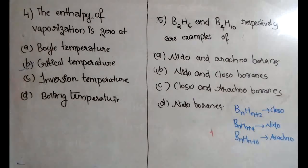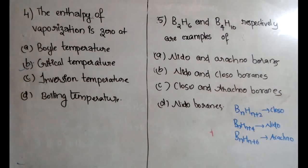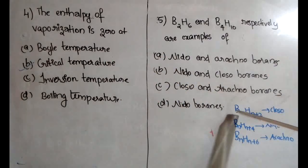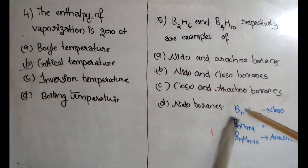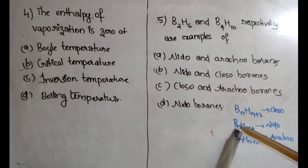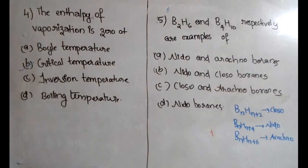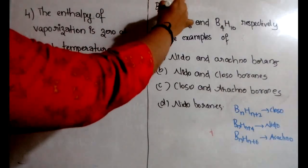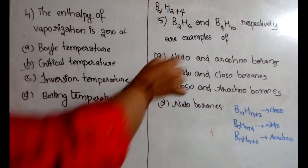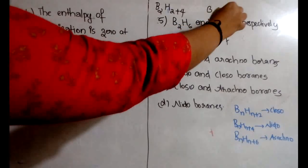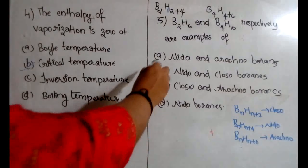The fifth question is about borane classification. Boranes are classified as closo, nido, arachno, etc. If a borane is BₙHₙ₊₂ it is closo; BₙHₙ₊₄ is nido; BₙHₙ₊₆ is arachno. For B₂H₆: it is B₂H₂₊₄, so it is nido. For B₄H₁₀: it is B₄H₄₊₆, so it is arachno. The answer is option A — nido and arachno.